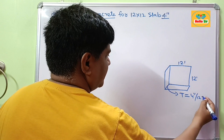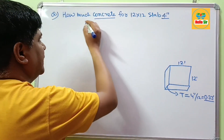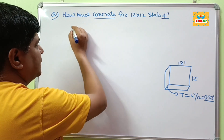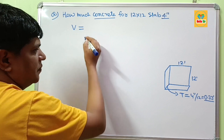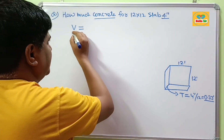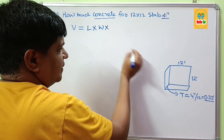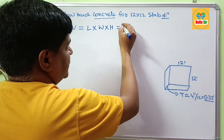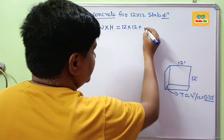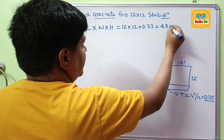If you convert 4 inches to feet, this will be about 0.33 feet. The required amount of concrete quantity is equal to the volume of this slab. To calculate the volume, multiply all three measurements: length, width, and height. That means 12 feet × 12 feet × 0.33 feet. If you multiply all this, it comes out to about 48 cubic feet.